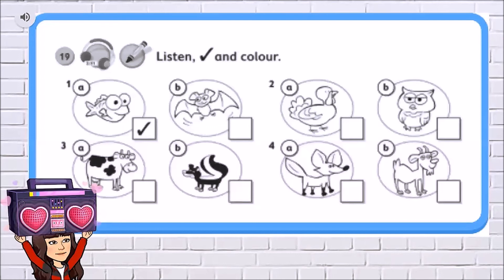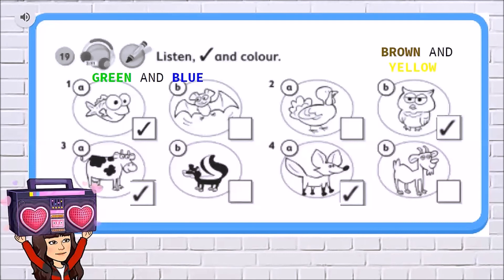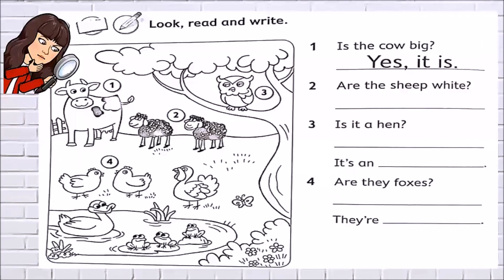Okay, it's time to check. Number 1 is a fish. Number 2 it's an owl. Number 3 it's a cow. Number 4 it's a fox. Well done. Now it's time to color. Color the fish in green and blue. Now color the owl in brown and yellow — remember, yellow eyes. Number 3, color the cow — it is white and black so you don't need to color. Number 4, color the fox in brown. Yes, very good.